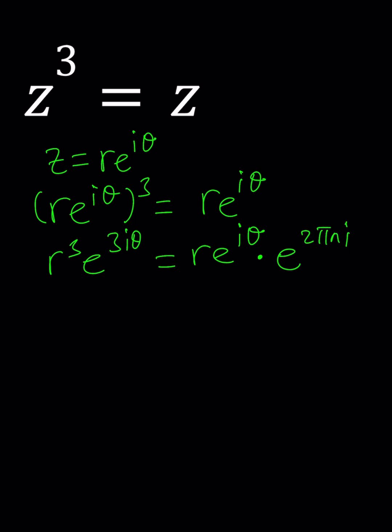Or you could use a different approach which uses algebra. We could subtract z from both sides and then factor out a z, and that gives you z(z² - 1) equals 0.